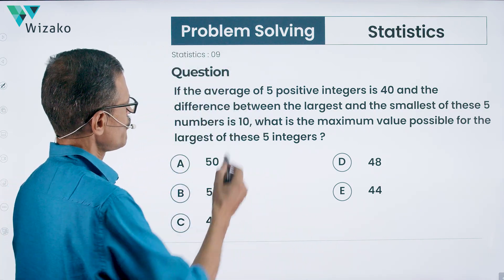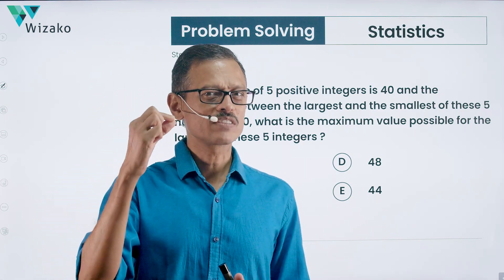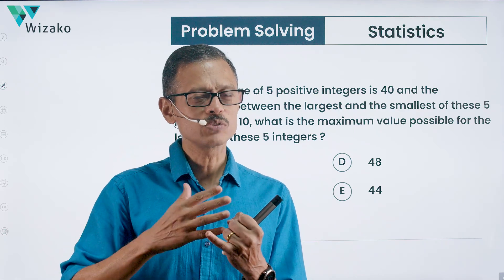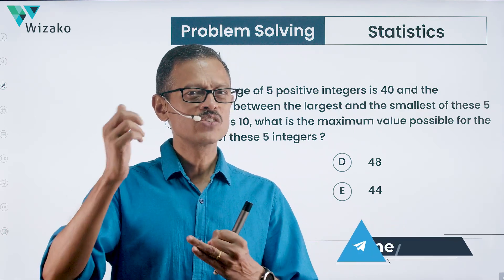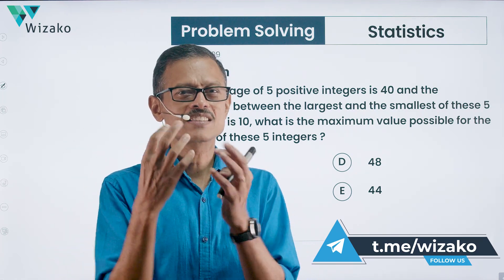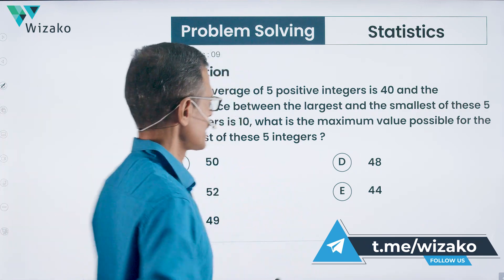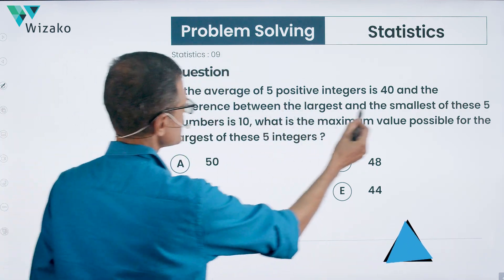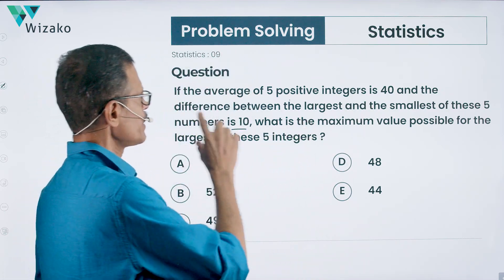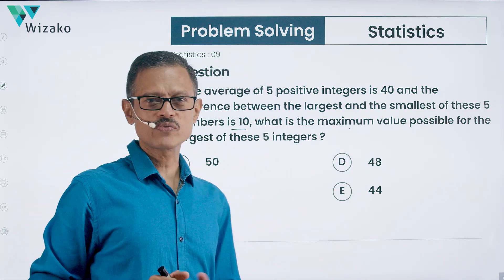If the average of 5 positive integers is 40 — whenever you read these things, make a note. They said these numbers are integers, which means 1.1, 2.2 won't work. They said positive integers, so 0, minus 1, minus 1.2 are not going to work. Essentially, the numbers are narrowed down to 1, 2, 3, 4 kind of numbers. And the difference between the largest and the smallest of these 5 numbers is 10.